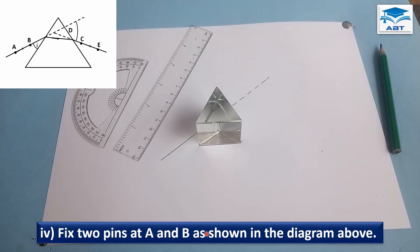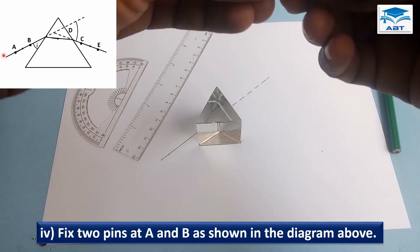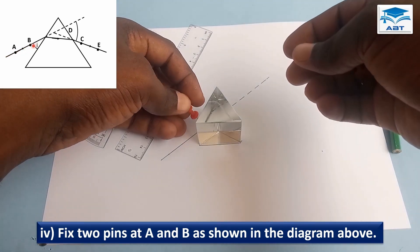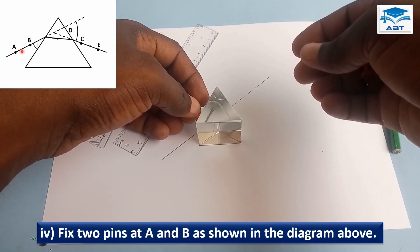Fix two pins at A and B as shown in the diagram above. So we are going to fix two pins on the incident ray.